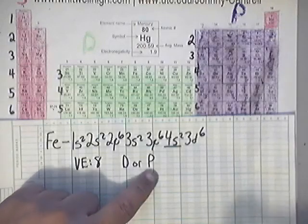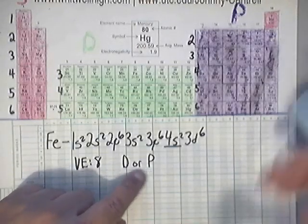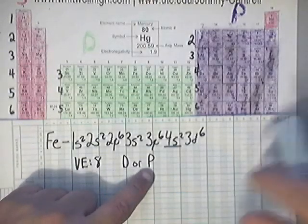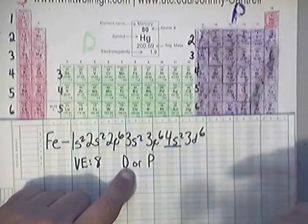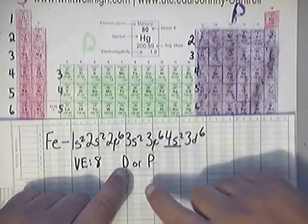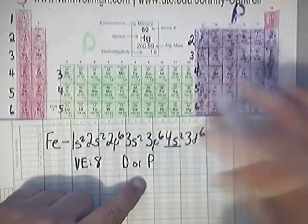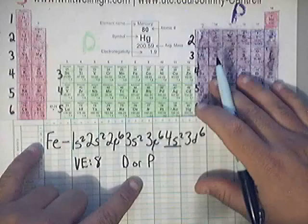And paramagnetic you can think of as being partially filled. Paramagnetic and diamagnetic has to deal with magnetism and things like that. If you want the book's definition you can just look back in the notes and get those, but I want to help you to figure this out much more easily than that.